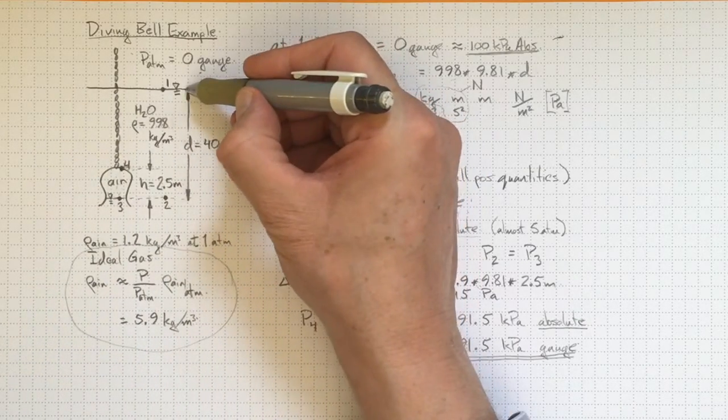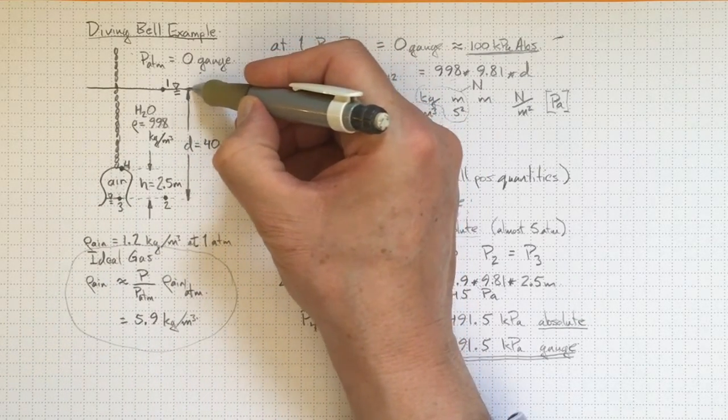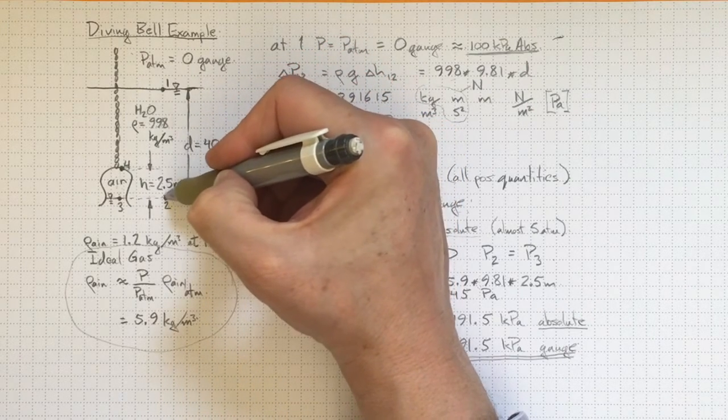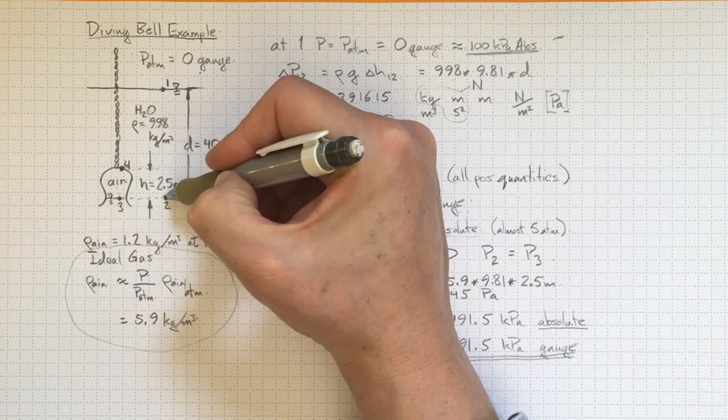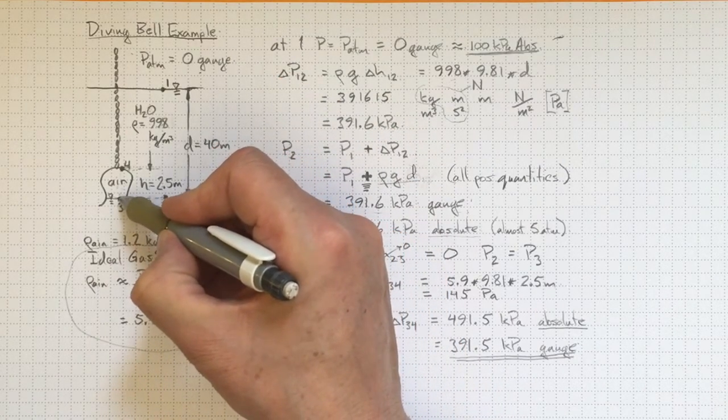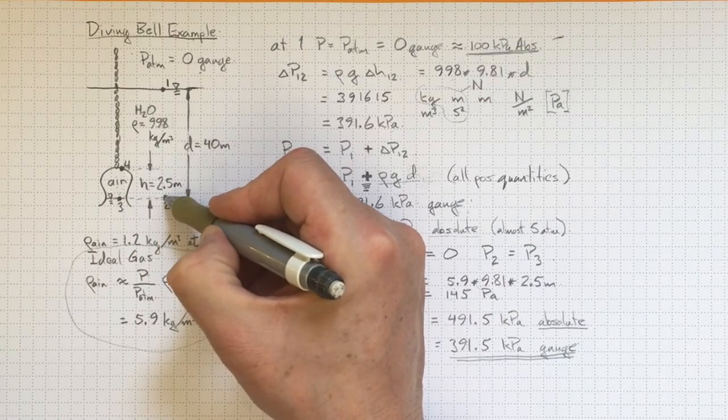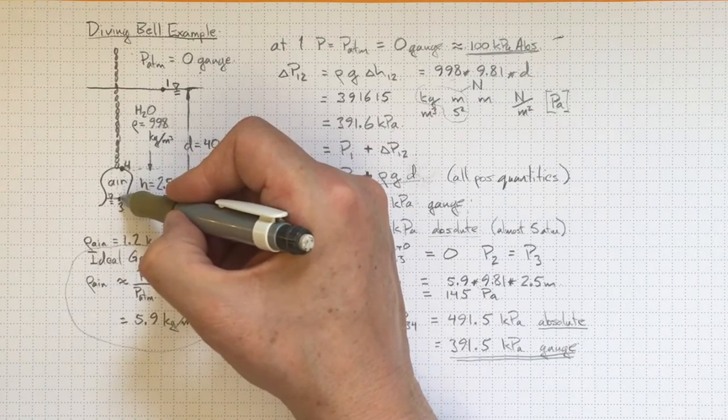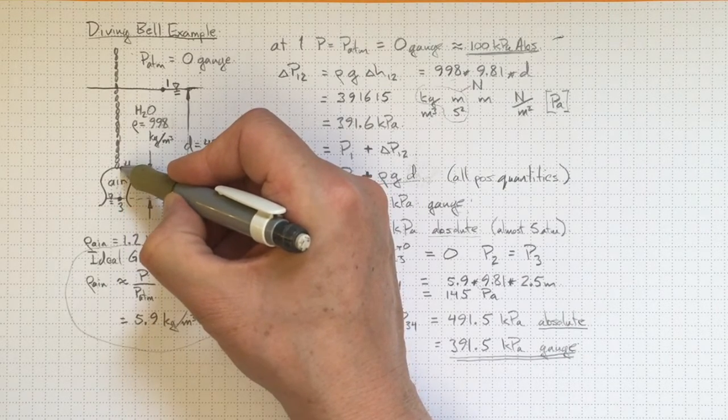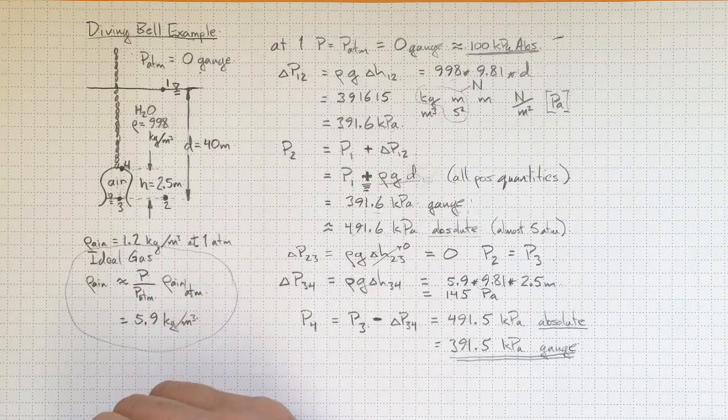We know that we can go across on the same elevation to say that p3 is the same as p2. And finally we can go from location 3 up through the air to location 4 to find out what the pressure is at location 4.